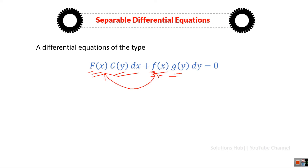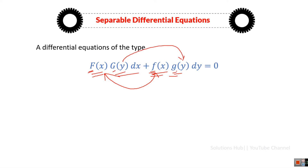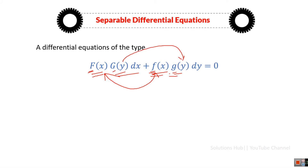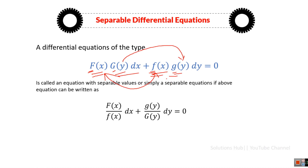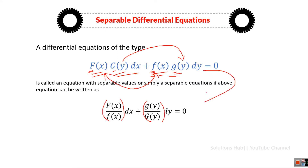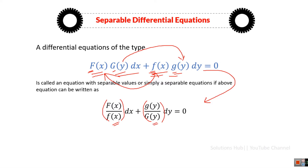Similarly, for the functions of Y, I have used capital G and lowercase g to convey that these two are both functions of Y but are not exactly the same. If you have a differential equation of this type and you are able to transform it into a new form where you have a separate function of X on one side and a separate function of Y on the other side, then you have succeeded in separating the variables.